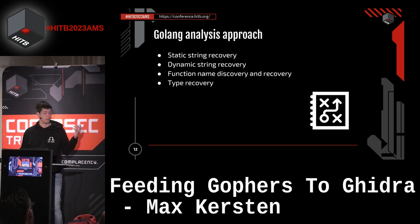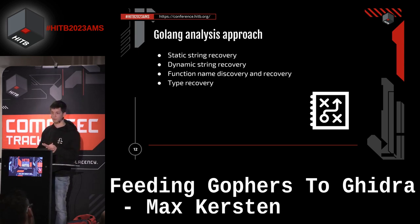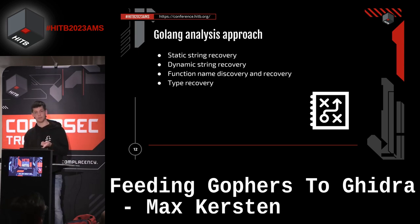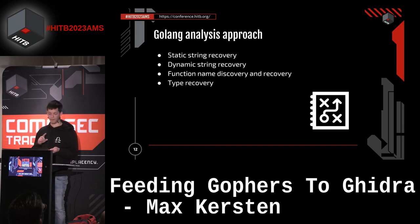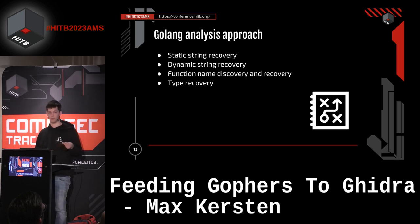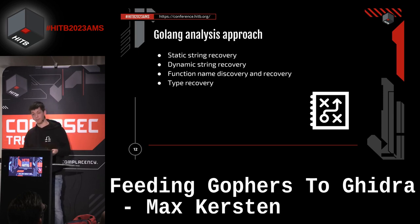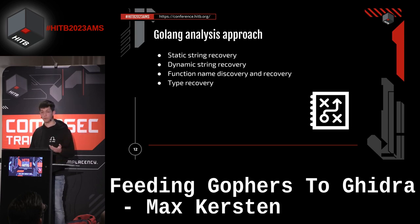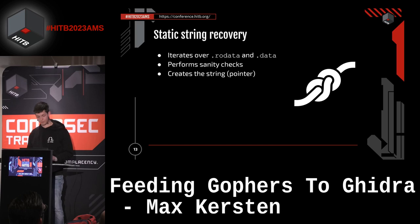The approach consists of essentially four different scripts. We have static string recovery, dynamic string recovery, function name recovery - where 'discovery' is renaming functions Ghidra has already recognized but doesn't know the name for, and 'recovery' is for functions Ghidra misses entirely - and type recovery, where we know the type we're dealing with and know the fields of the struct, which is time-saving to say the least.